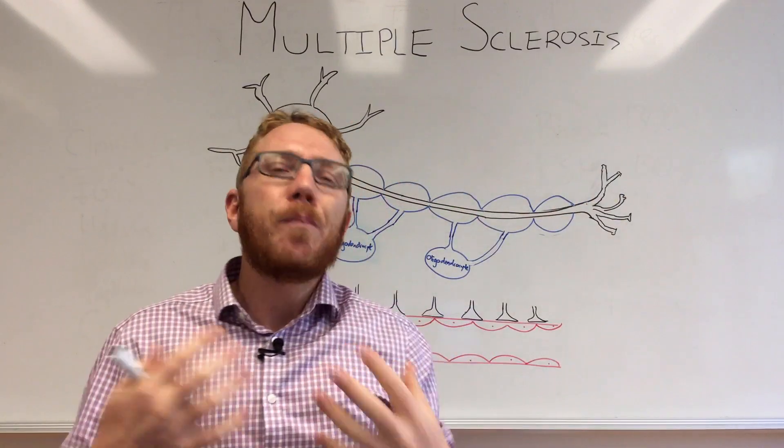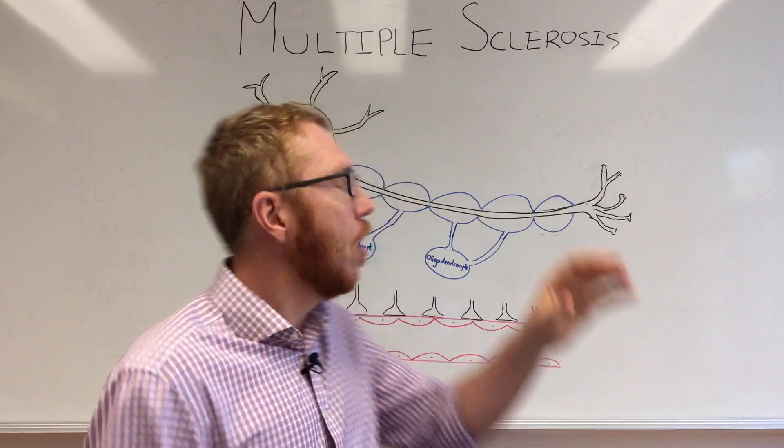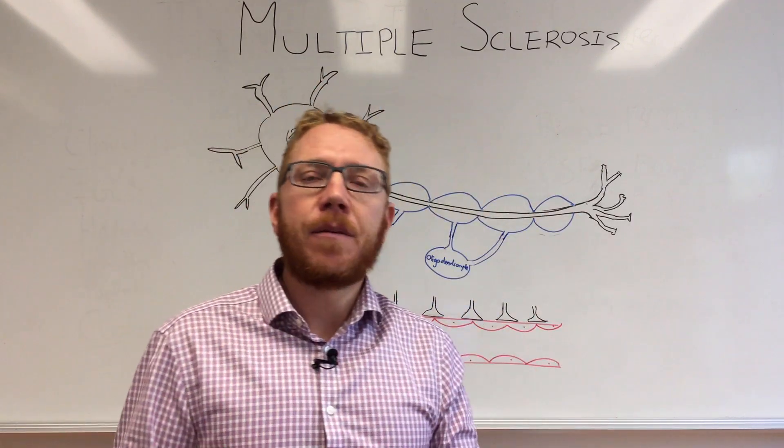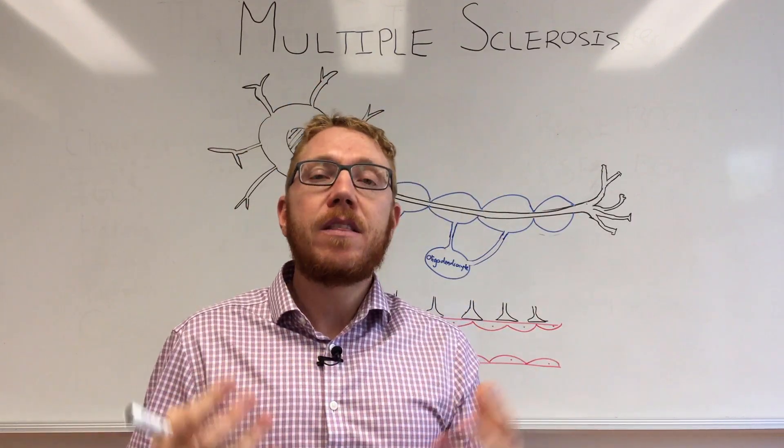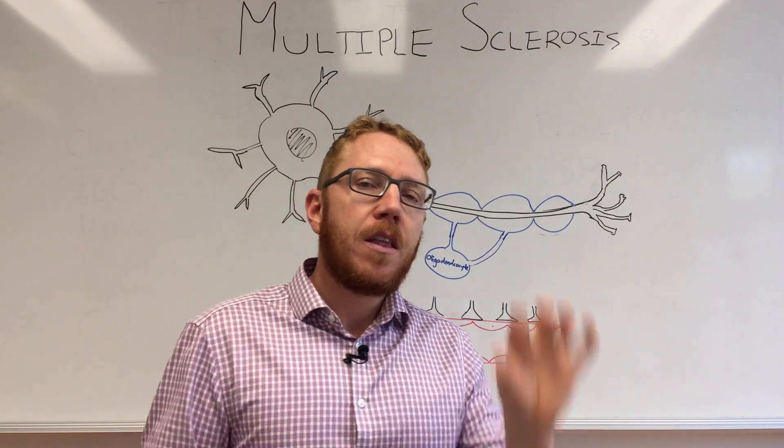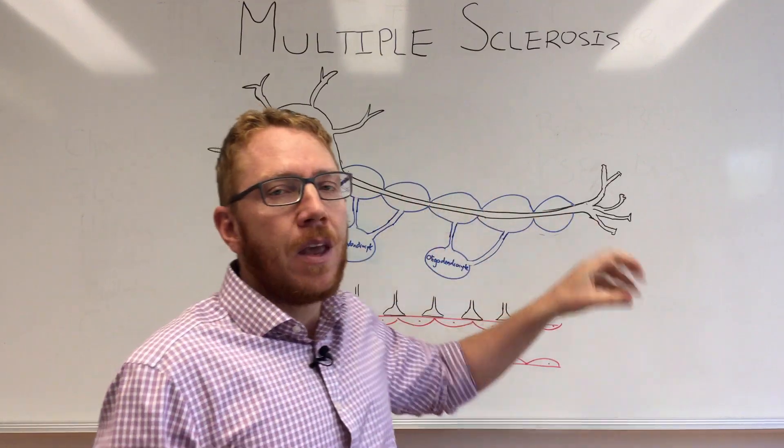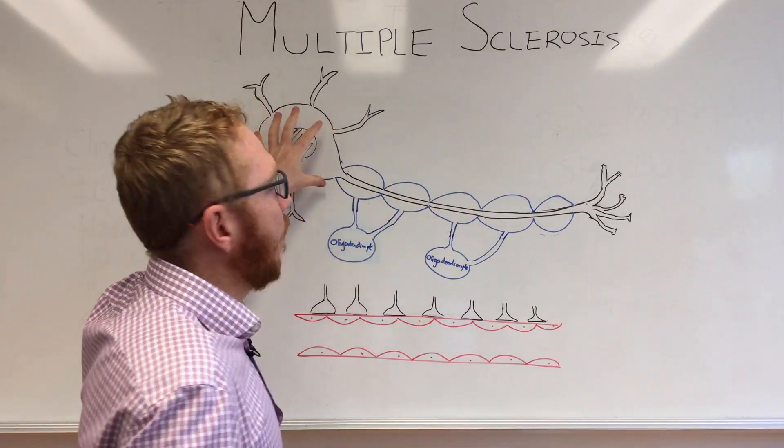Sclerosis, you may have heard with atherosclerosis, specifically means plaque. Multiple meaning many. So these plaques are within the central nervous system - within the brain and spinal cord. The area or tissue that is affected is what we call the myelin.